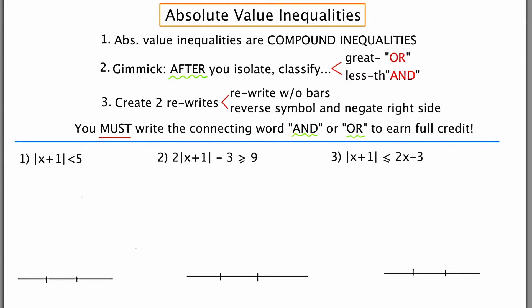The first is going to be a rewrite of the original problem but without the absolute value bars. The second is going to be a rewrite of the original inequality but you're going to reverse the direction of the inequality symbol and you're also going to negate the right hand side. It's absolutely essential that you write the connecting word and or or in between the two rewrites.